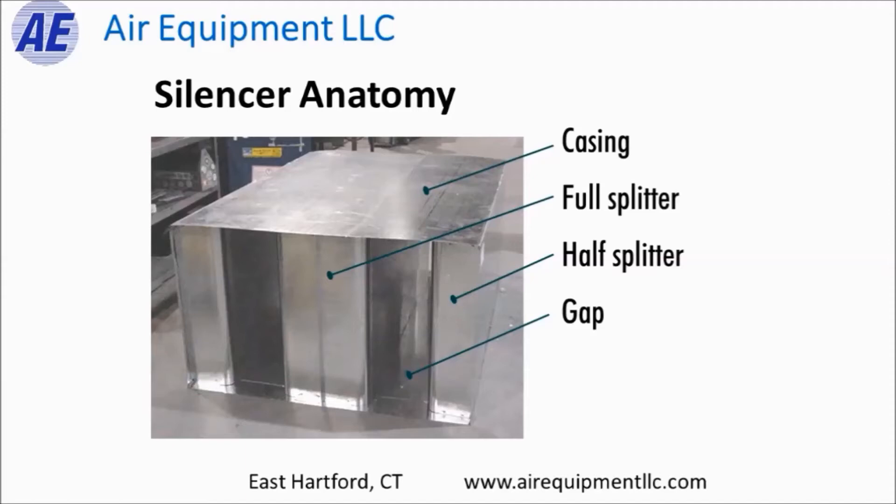As the air flows through the silencer, noise energy is captured in those modules — those splitters — and it gets trapped and dissipates among the fibers of the fiberglass. Essentially the noise is absorbed. So the noise level on the discharge side of the silencer is much quieter than what came in on the inlet side.